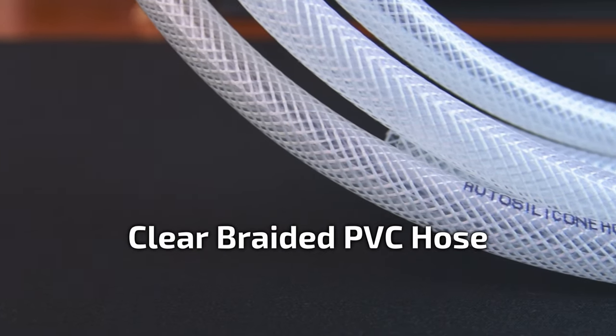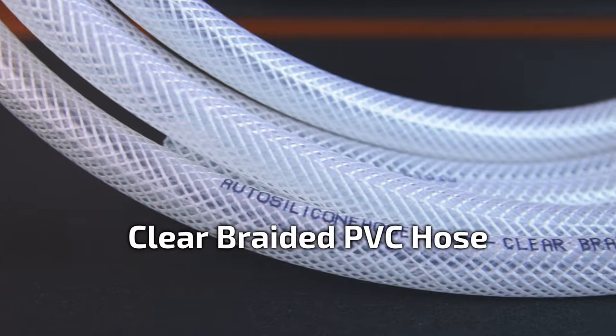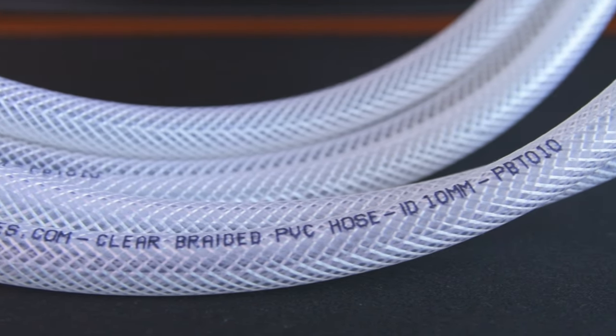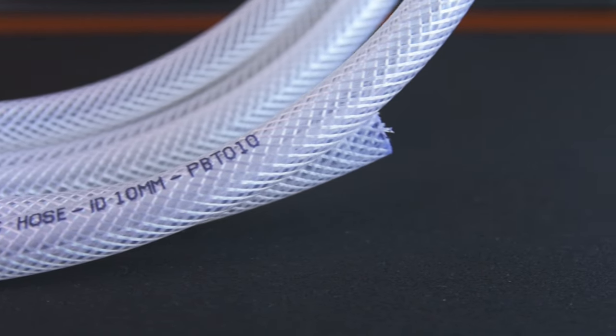The hose is pretty straightforward. It's a clear braided PVC hose with an internal diameter of 10 millimetres which is a little over three-eighths of an inch. The section that I'm using is four metres long.